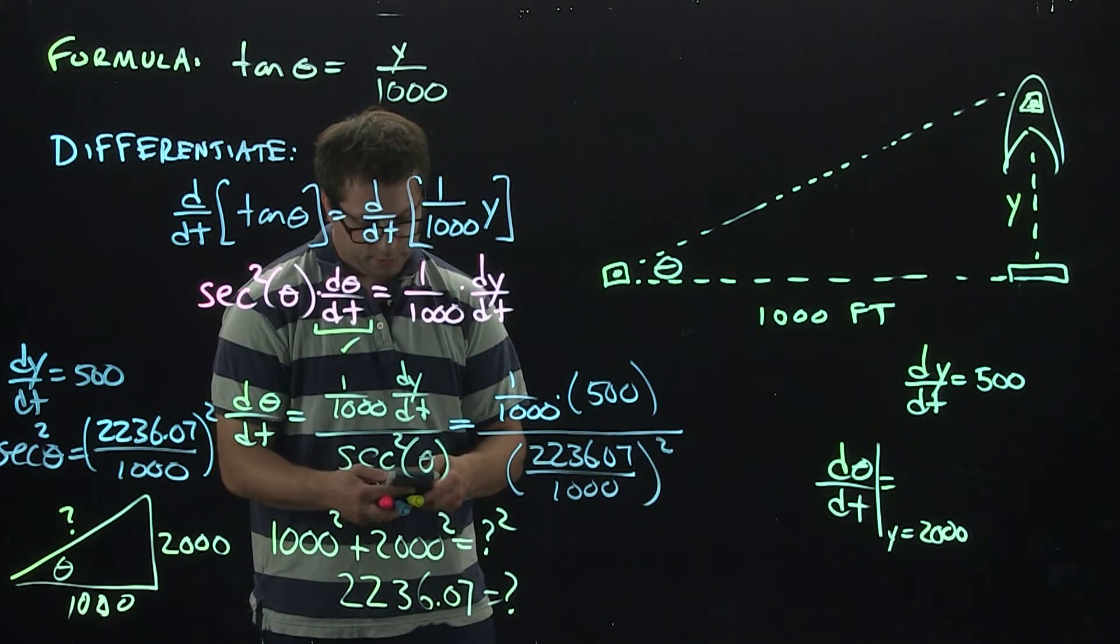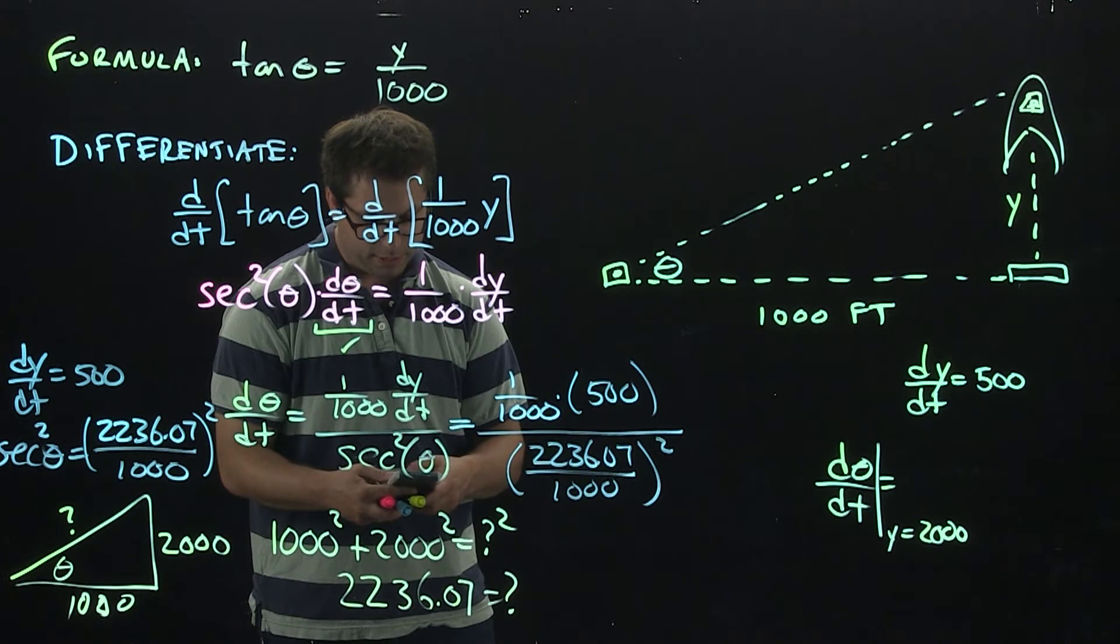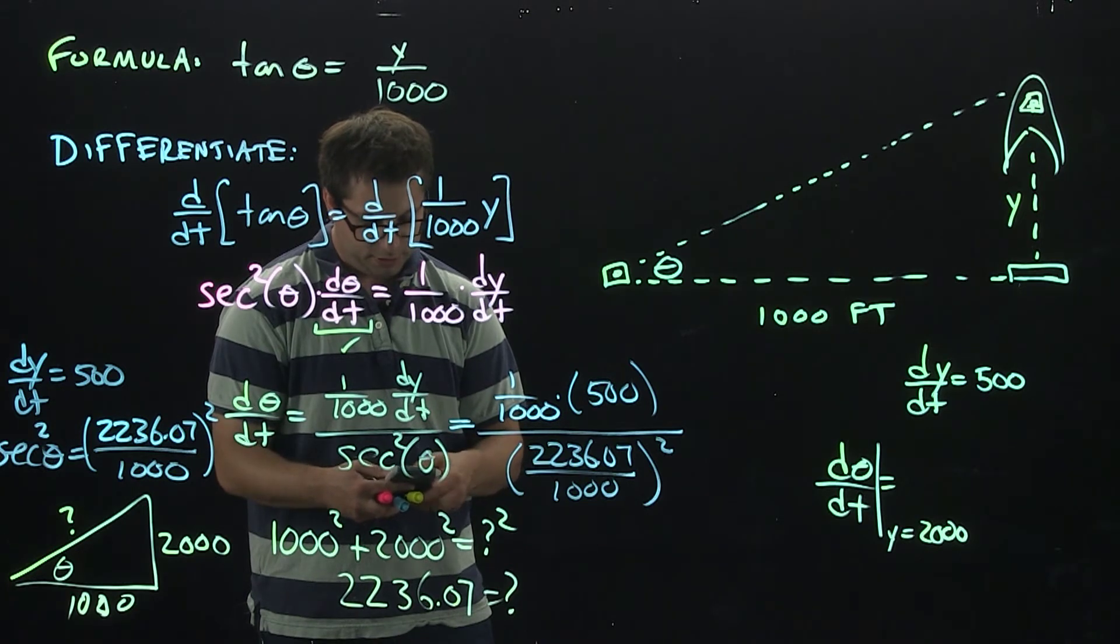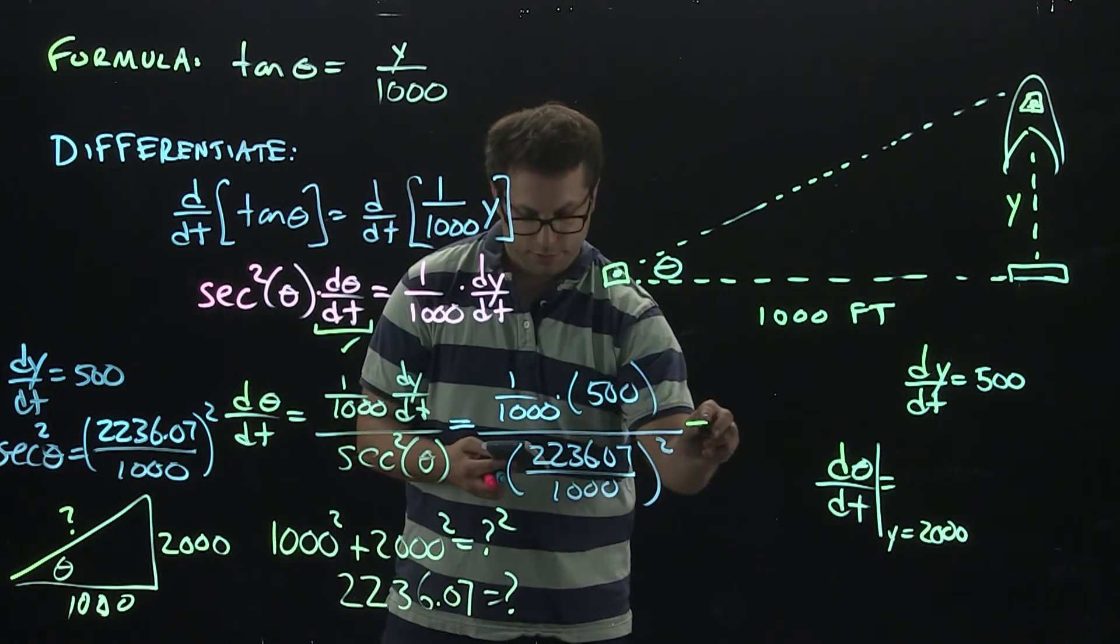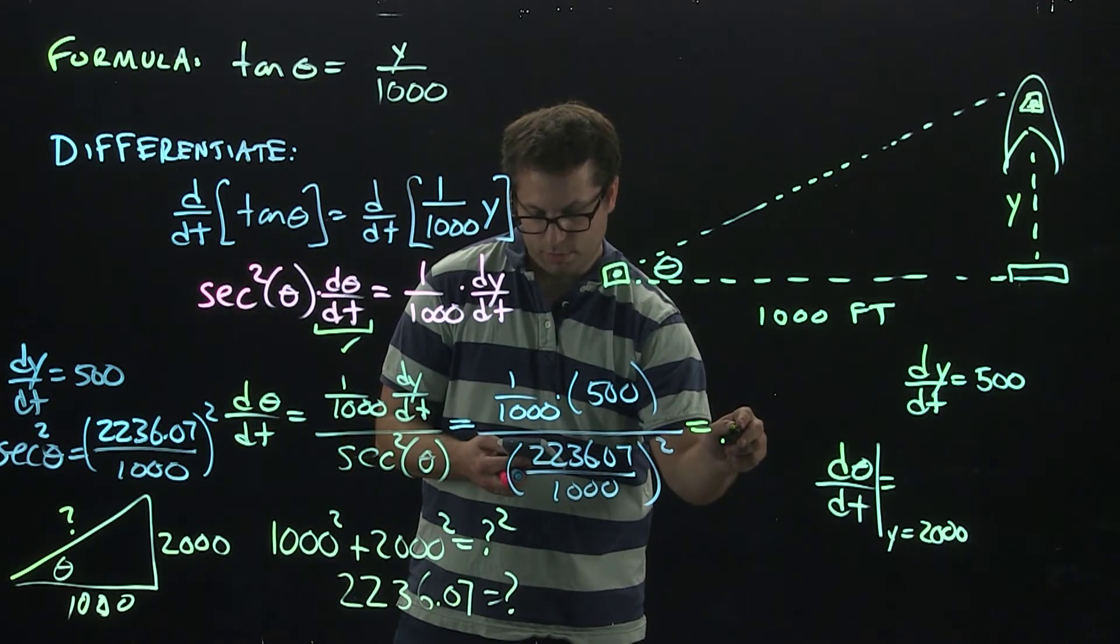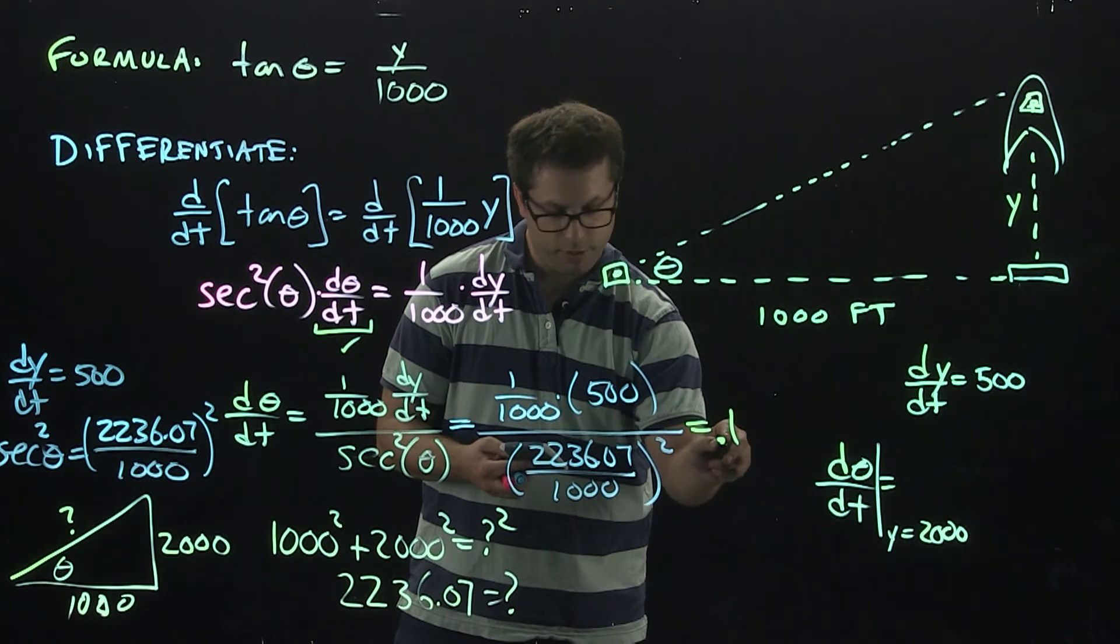All right, grab my calculator here. So I'm just going to evaluate this. 1 over 1,000 times 500. Then we're going to divide by that big number here. So it looks like our final answer is going to be, well we're going to round. So it's actually just going to be 0.1.